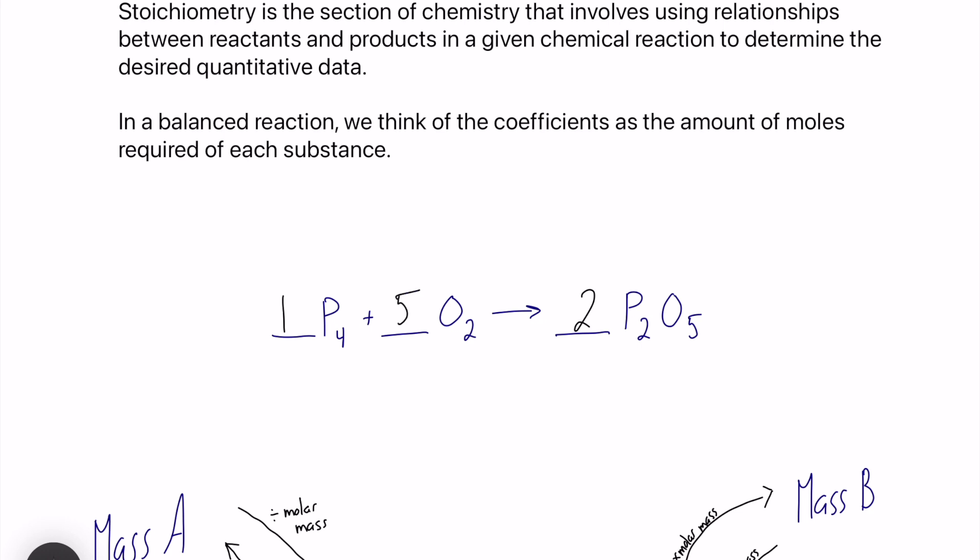So basically, when we're relating this to stoichiometry, this means that for every 1 mole of P4, we're going to have 2 moles of P2O5 and 5 moles of O2. Those coefficients, those balanced coefficients, they connect to the amount of moles for each substance in a chemical reaction.